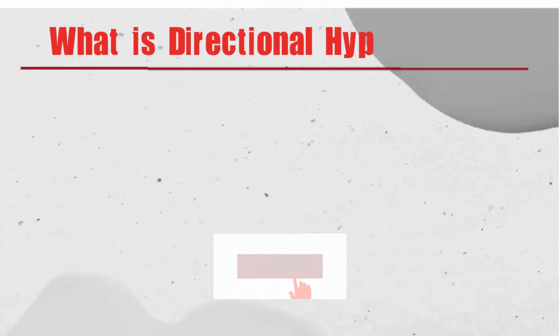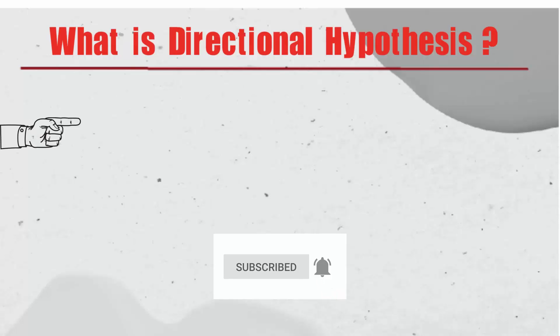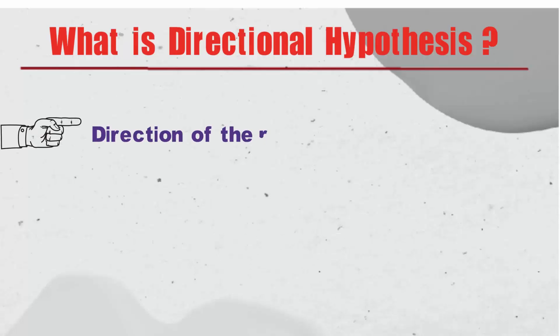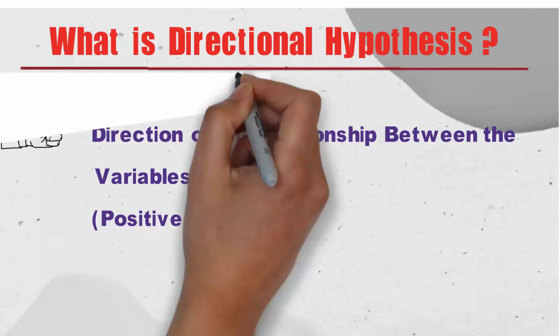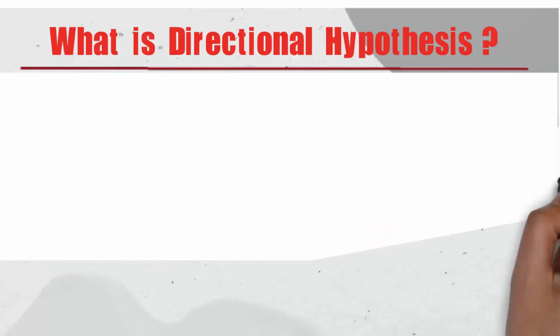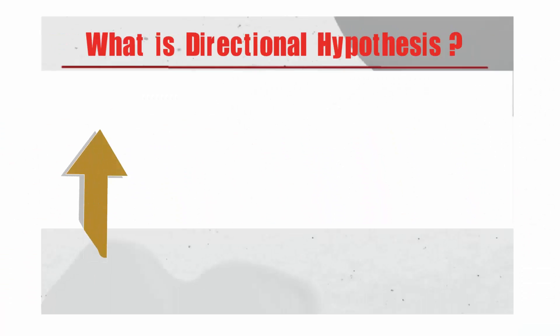First we need to understand: what is directional hypothesis? Directional hypotheses are a type of hypothesis in which the direction of the relationship between the variables — positive and negative — is indicated. For example: the greater the stress experienced in the job, the lower the job satisfaction of employees.